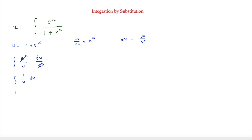Now from our standard integrals, 1 over u integrates to give ln|u| plus c. It is modulus because you can't take the ln of a negative number. So substituting back, the final answer is ln|1 plus eˣ| plus c.